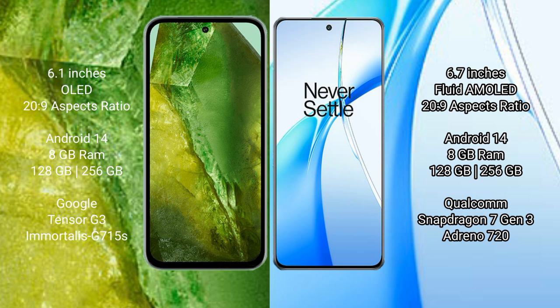Google Pixel 8a runs on the Android 14 operating system and comes with 8GB RAM and 128GB to 256GB internal storage, powered by the Google Tensor G3 processor.